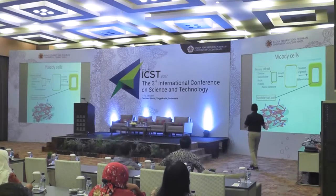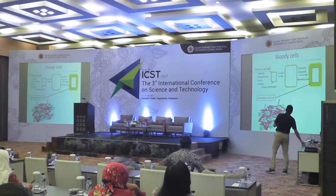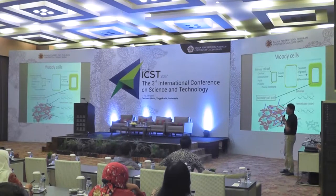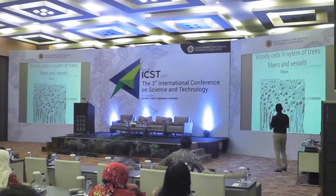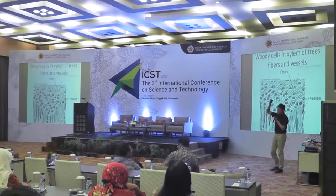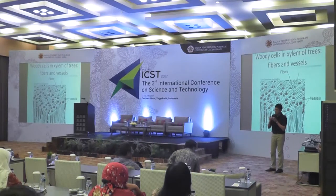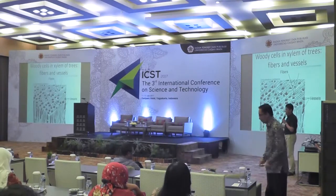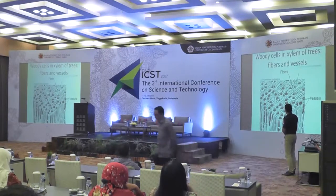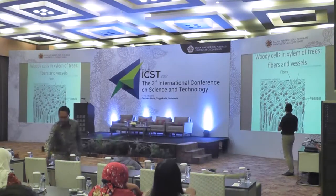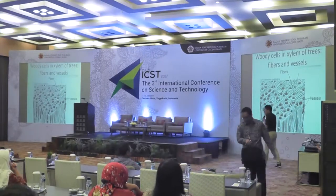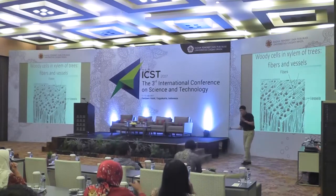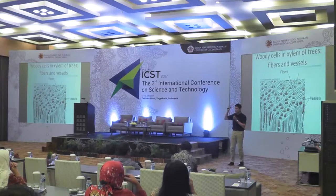The secondary cell wall contains, again, cellulose, hemicellulose, and lignin. Some cells, such as woody cells, have this thick secondary cell wall. Here you can see two types of cells in woody tissue: fibers and vessels. If we want to modify woody biomass, we need to change these two kinds of cells.